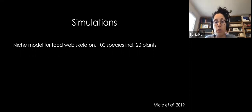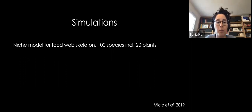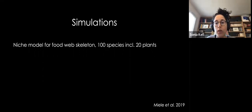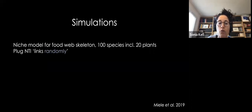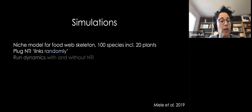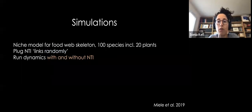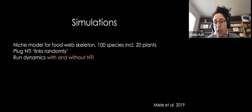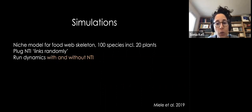We used a niche model to generate food webs with a realistic structure, initially composed of 100 species including 20 plants. Into this food web skeleton we plugged non-trophic interaction links randomly, since we don't have a clear idea of realistic structures for these interactions. We then ran dynamical simulations with and without these non-trophic interactions — all simulations run in pairs: the food web alone and the same food web with the same parameter values but with non-trophic interactions added.